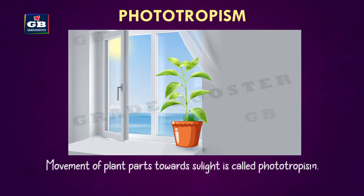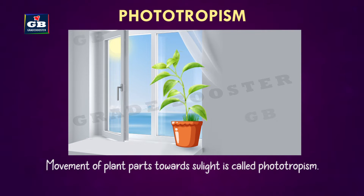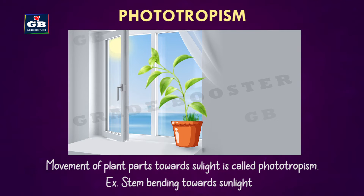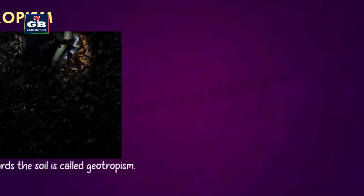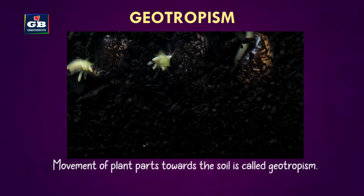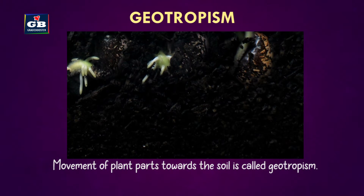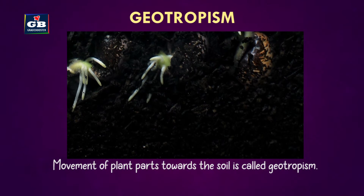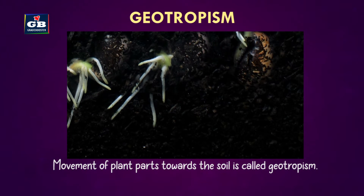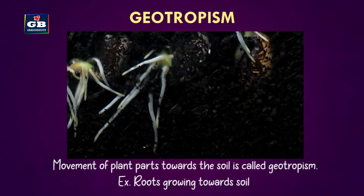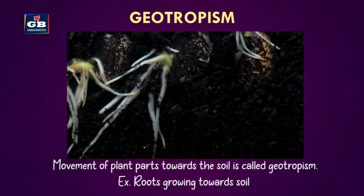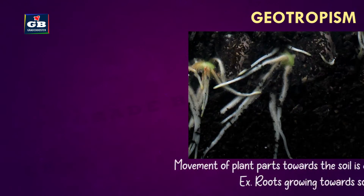The movement of plant parts towards sunlight is called phototropism. Example: stem bending towards sunlight. Movement of plant parts towards the soil is called geotropism. Example: roots growing towards soil.